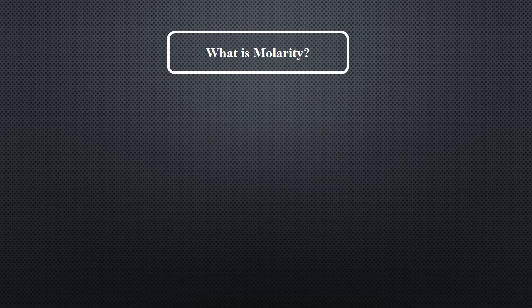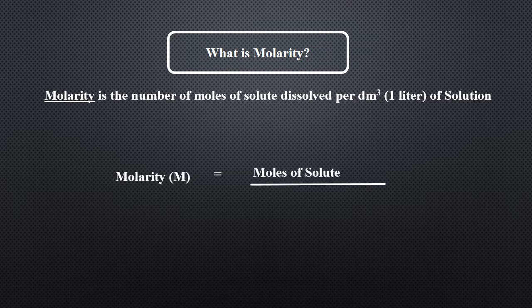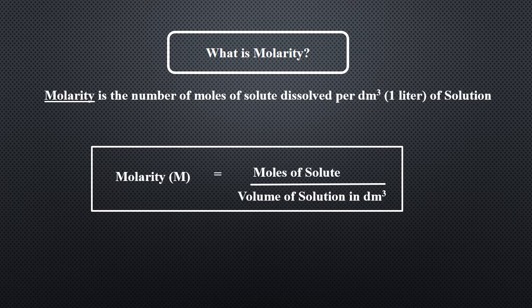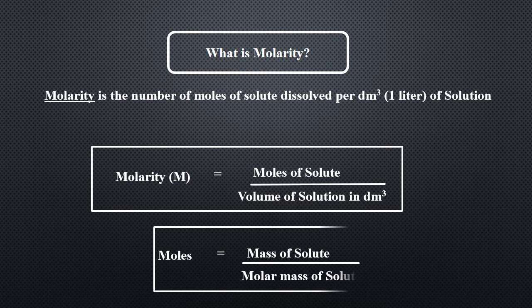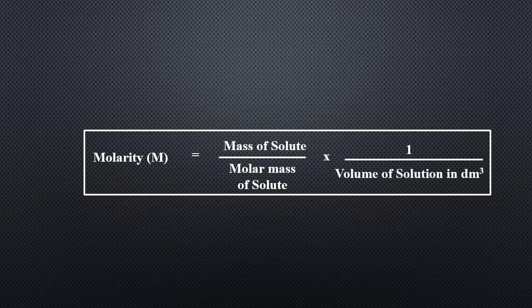What is molarity? Molarity is the number of moles of solute dissolved per dm³ — that is, 1 liter of solution. Molarity M is equal to moles of solute over volume of solution in dm³, where moles is equal to mass of solute over molar mass of solute. So the molarity formula can be written as: M = (mass of solute / molar mass of solute) × (1 / volume of solution in dm³).